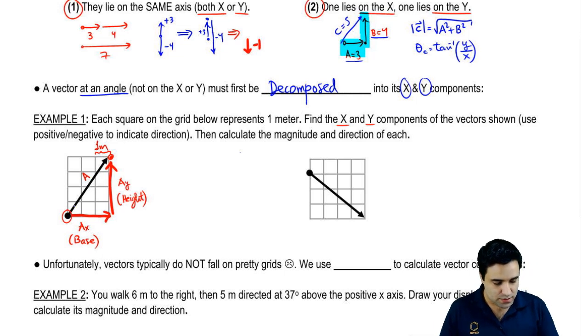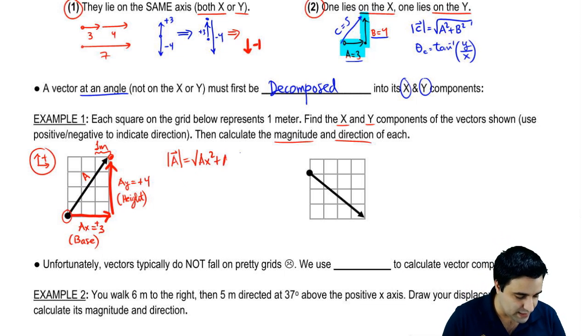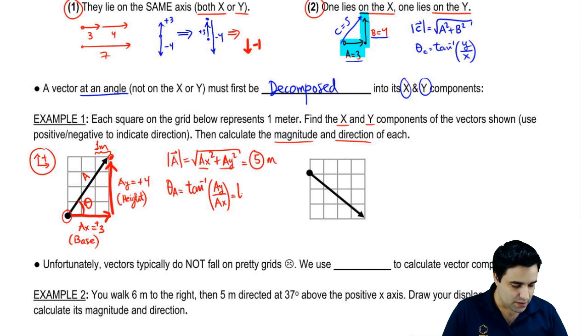If I call this vector a, this leg here is ax, it's the base of the triangle that I formed. And ay is the height of the triangle that I just formed. In this case, I can count the little squares. There is one, two, three here. So this is three going to the right. Remember, up and to the right is positive. Three, positive three, just to be clear. And this is one, two, three, four, positive four. Now, I want to find the magnitude and direction. The magnitude of a is the square root of ax squared plus ay squared. If you combine this, you get five, three, four, five triangle. And then the angle of a is the arc tangent of y over x, ay over ax. So this is the arc tangent of four over three, and that is 53 degrees.